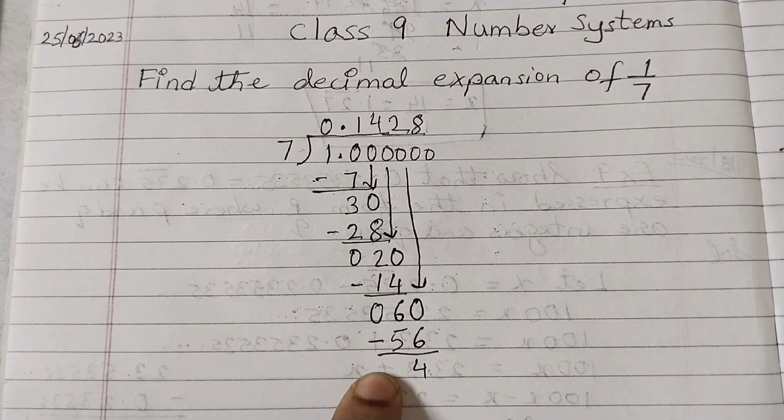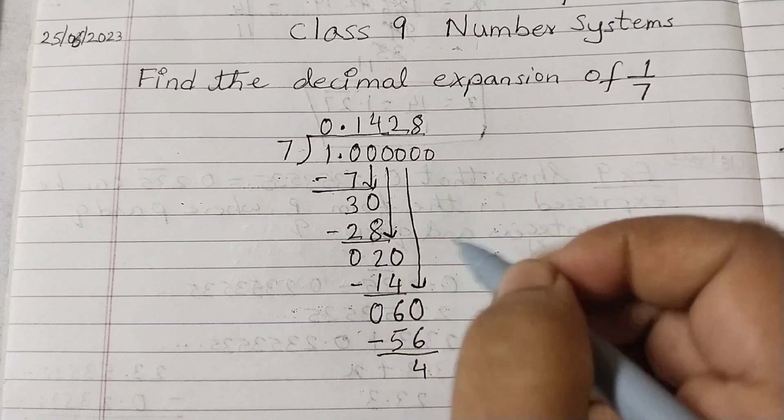If you want, you can write a 0 here, or if you don't want, it's fine. You can leave it like that. Bring down the next 0.